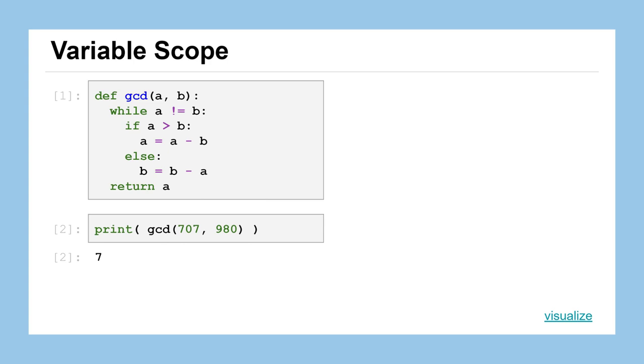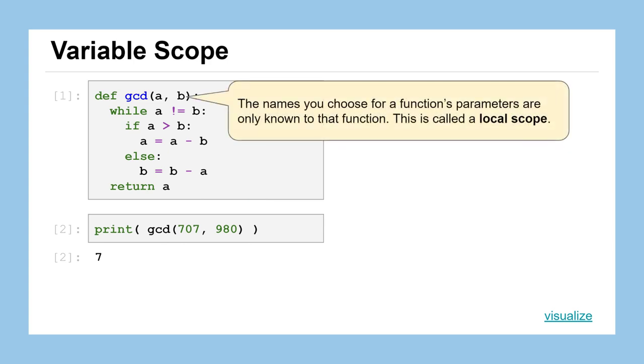One thing about functions and their parameters is that those values A and B are only known to the code that's inside of the function. It kind of retains control over them. That's called having local scope. Those variables are not accessible to everything else in the notebook or a program that you're running, only to the code that's inside your function. So, for example, if I were to run this function and say print the greatest common divisor of 707 and 980, the parameters A and B are going to take on the values of 707, 980, they're going to do the work, return the value. But if I were to then run in the next cell print A, you're going to get an error message because the entire notebook, the notebook at large or what we call the global scope, doesn't have access to that variable A.